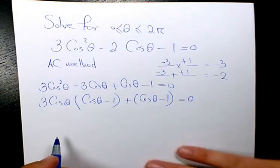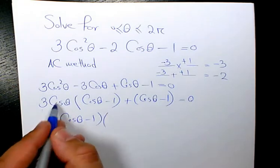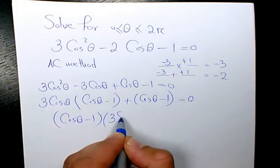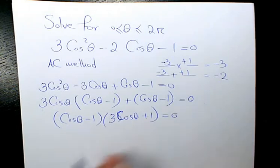Then, I'm going to factor cosine theta minus 1, and here it will be 3 cosine theta plus 1 equals 0.